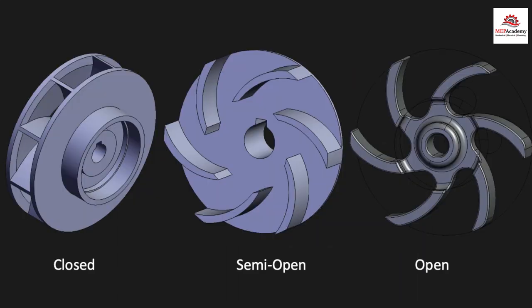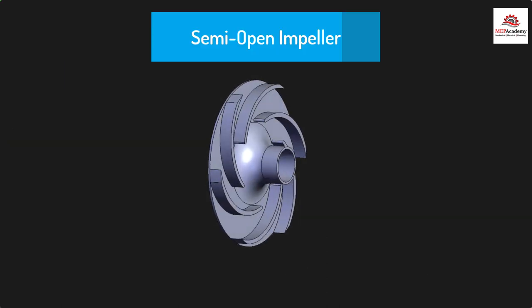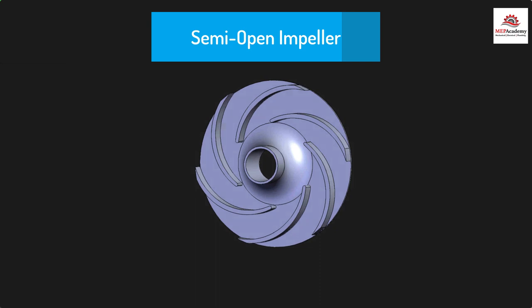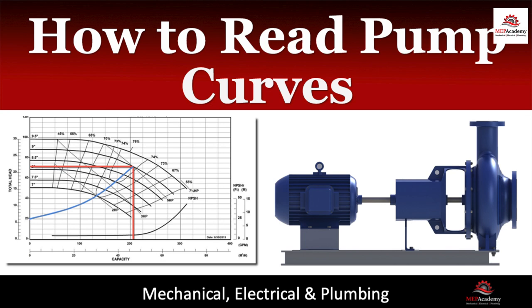Impellers come in various configurations including closed, semi-open, and open. The impeller shown here is of the semi-open type, which means it has a shroud on the backside only. If you missed our previous video on pump charts, check that video out to see how impellers are chosen to meet system design conditions.